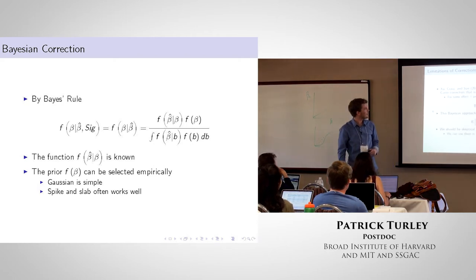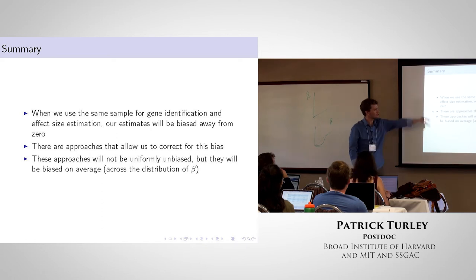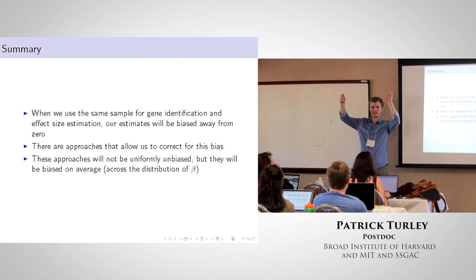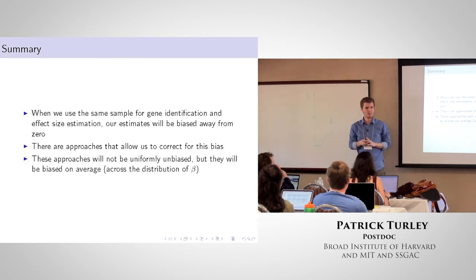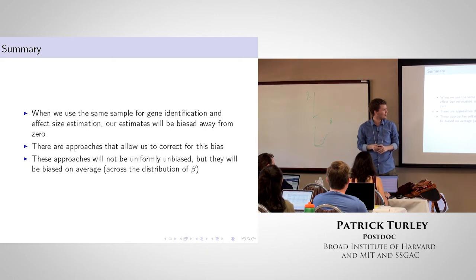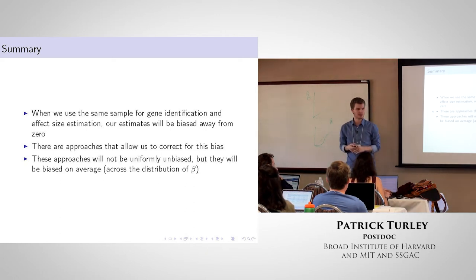In summary: you shouldn't use the same data for gene discovery and effect estimation. If you need estimates for power calculations, apply one of these winner's curse corrections. You'll get practice with this in problem set three, and it will be covered again in tomorrow's lectures.